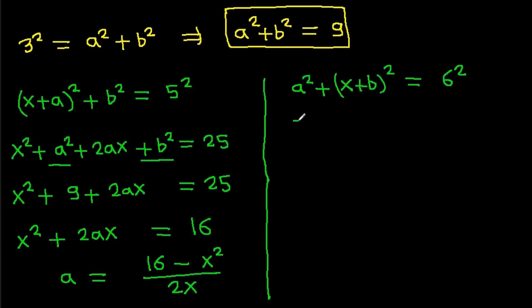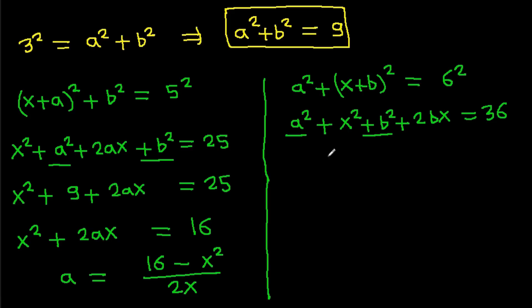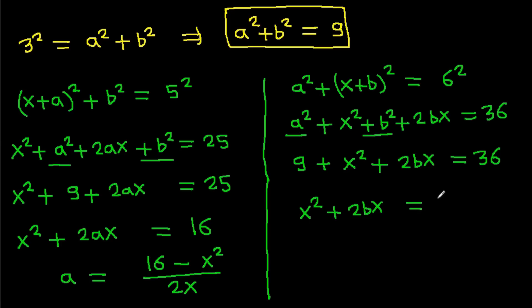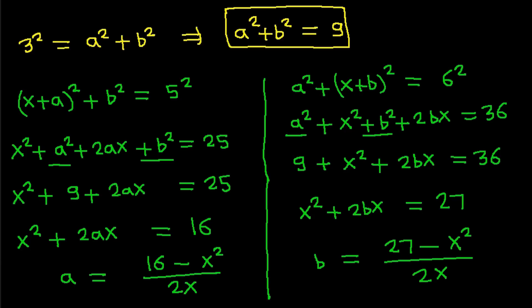From the PC equation: A² + (X + B)² = 36, which gives X² + B² + 2BX + A² = 36. Substituting A² + B² = 9: X² + 2BX = 27. So B = (27 - X²) / 2X.